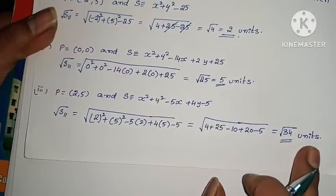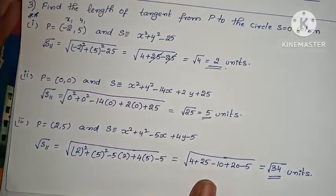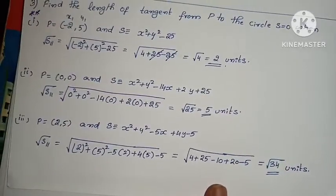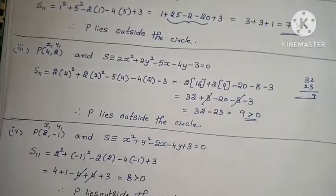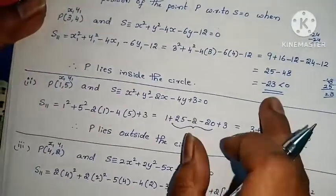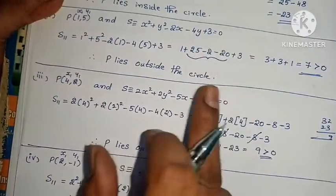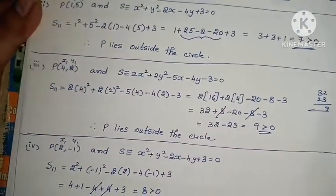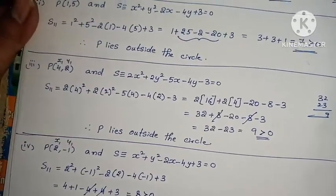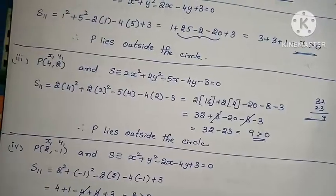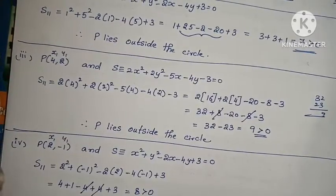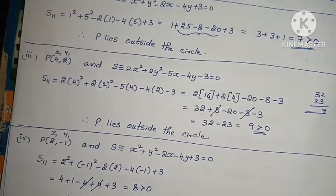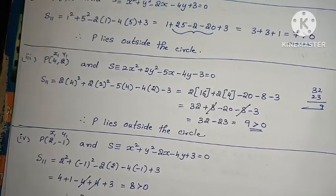So, to summarize: length of a tangent formula is root S11, power of a point formula is S11, and for position of point — S11 less than 0 is inside the circle, greater than 0 is outside, equals 0 is on the circle. The problems from rooms 2 and 3 will be discussed in the next video. If you have doubts, comment below. Please like, share, and subscribe. Thank you.